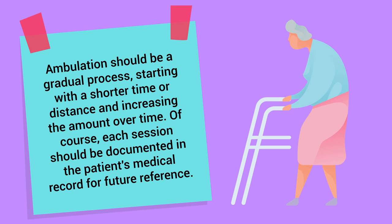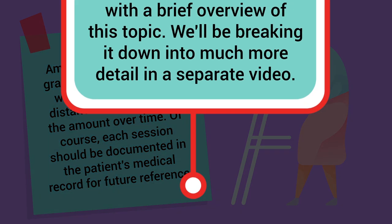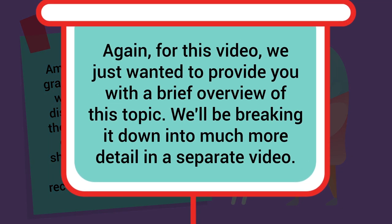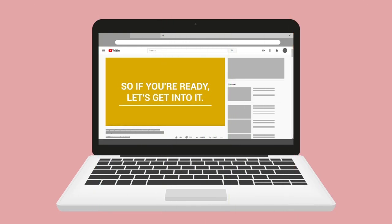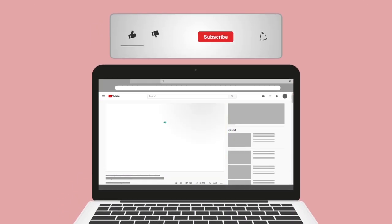Ambulation should be a gradual process, starting with a shorter time or distance and increasing the amount over time. Of course, each session should be documented in the patient's medical record for future reference. For this video, we just wanted to provide a brief overview of this topic — we'll be breaking it down in much more detail in a separate video.